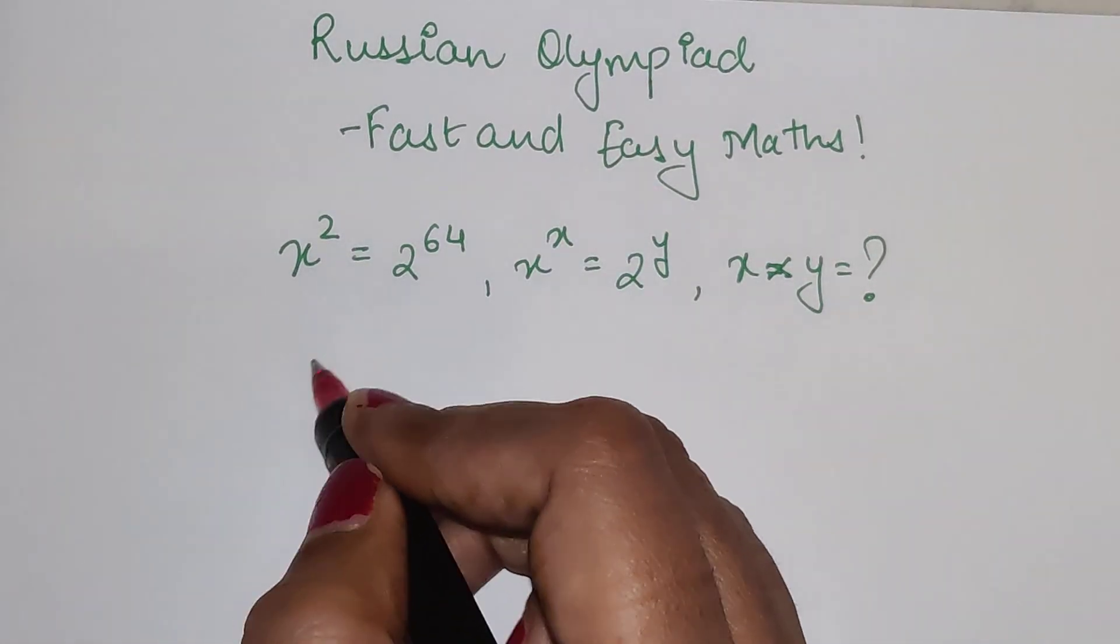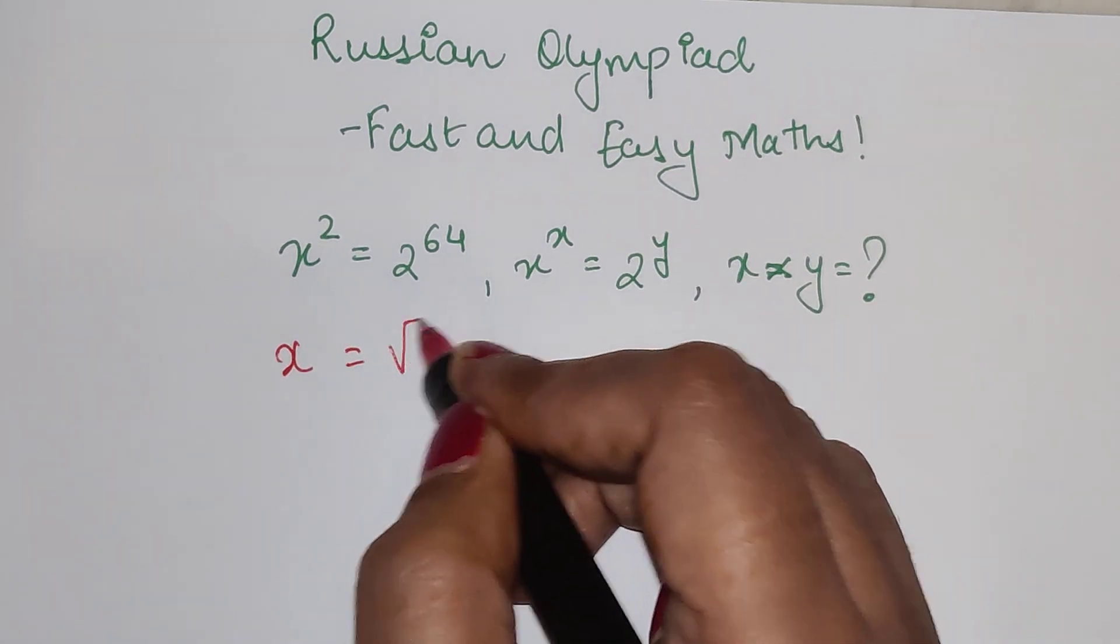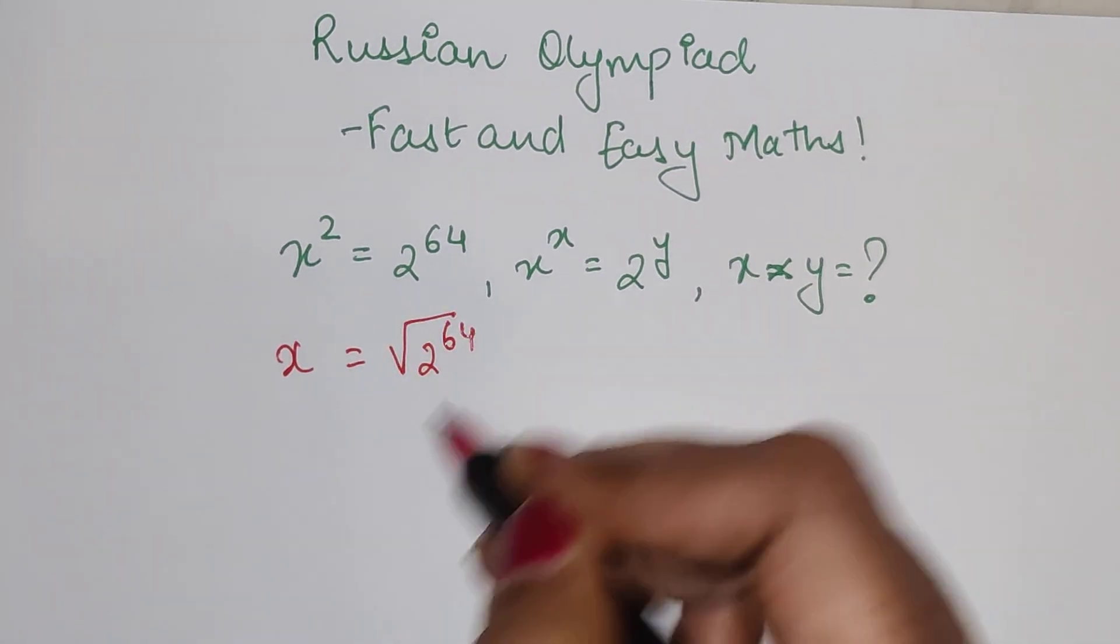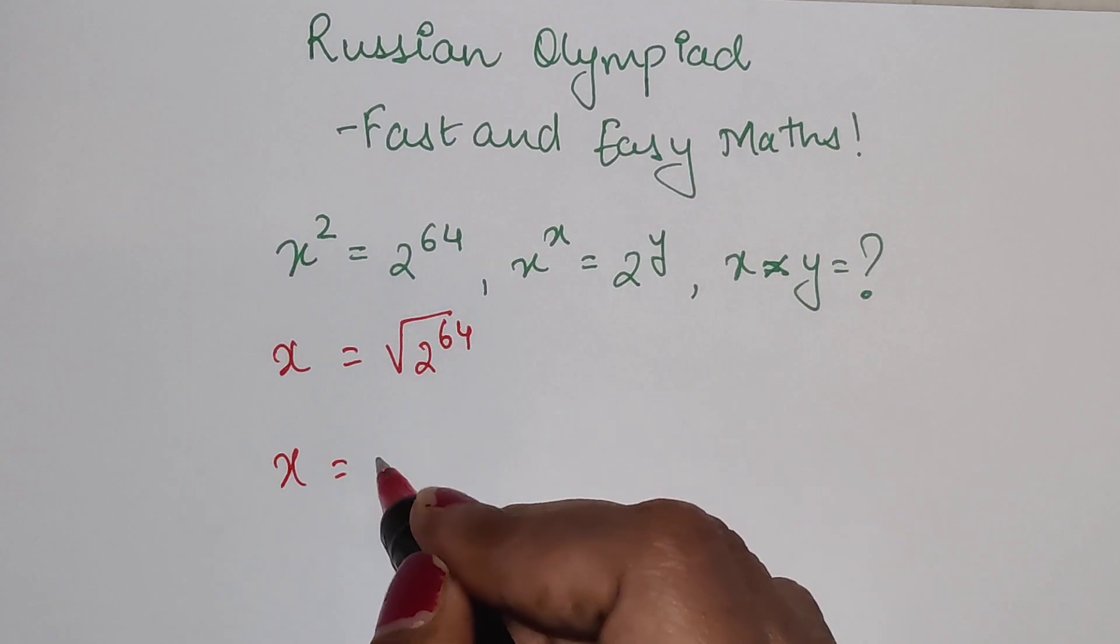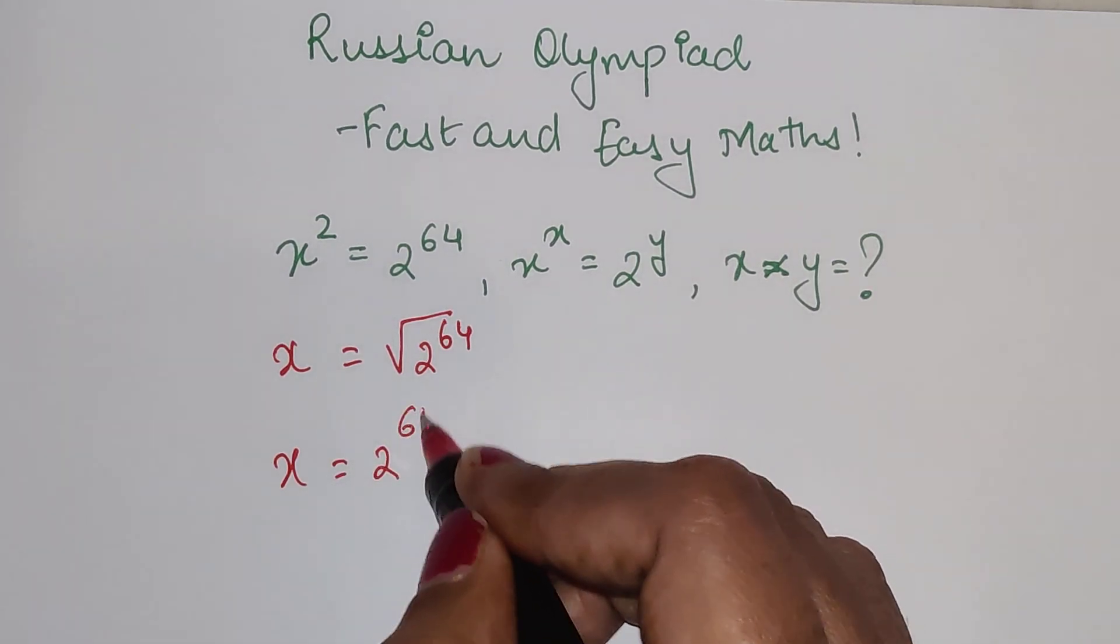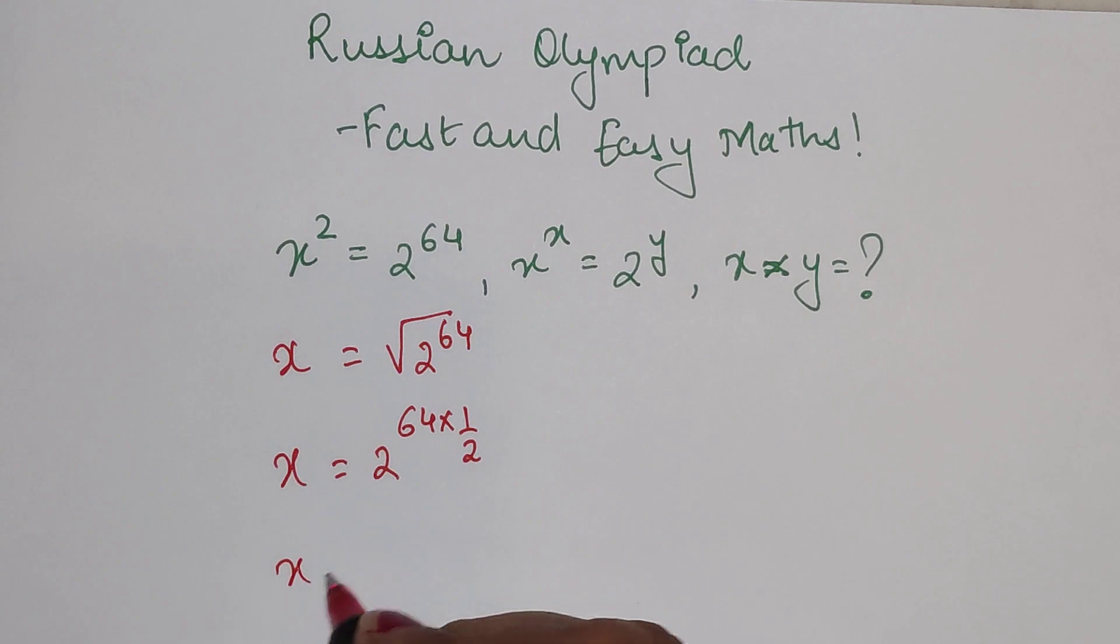Here I can take the square root and find the value of x. That becomes the square root of 2^64. I can write x as 2^(64 × 1/2), which gives us x = 2^32.